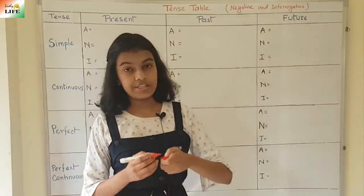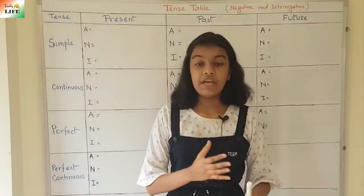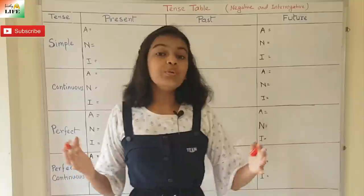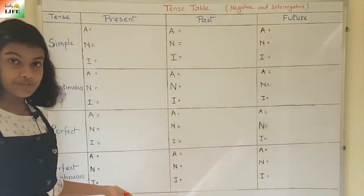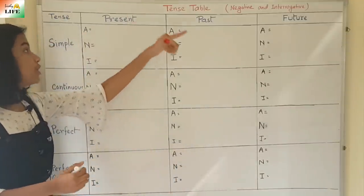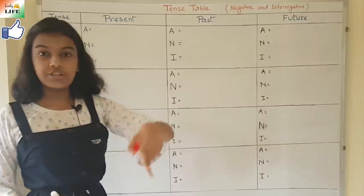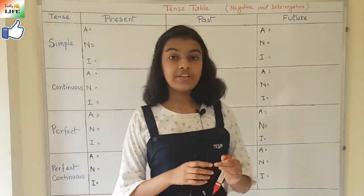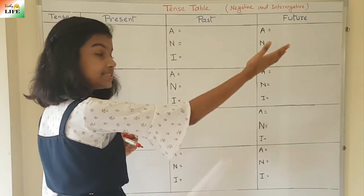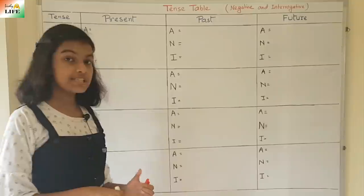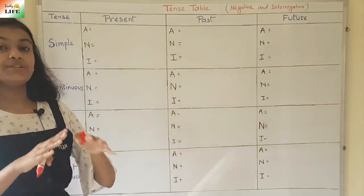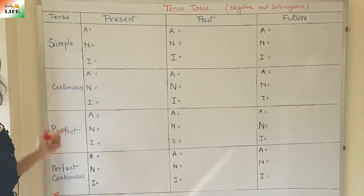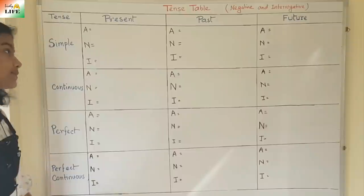So, negative and interrogative. What is meant by negative? It means to disagree or disapprove something. And interrogative means to question. We already learned about the affirmative sentences of these 12 tenses, but again we are going to write that and also learn about the negative and interrogative forms. As I discussed in the previous video, there are total three types of tenses — present tense, past tense, and future tense. These three tenses are again divided into four: simple, continuous, perfect, and perfect continuous. So in total, there are 12 tenses.